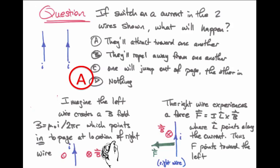And when we curl our fingers from straight up to out of the page, our thumb now points back to the right, and the left-hand wire is attracted to the right-hand wire. So the two wires try to squeeze toward one another.